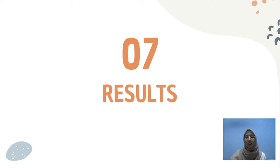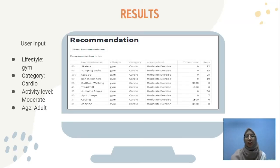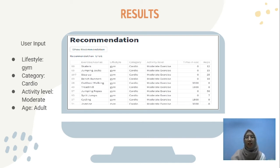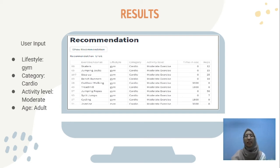For the last section, these are the results of the system. This slide shows results from the first user, where the user has input his or her preferences. The user chose gym as the preferred lifestyle, cardio activity as the category, which is equivalent to aerobic activity, and moderate exercise as the activity level, with the age group adult. As shown, there is a list of 10 recommended exercises with the highest similarity to user preferences, including skaters, jumping jacks, step-ups, cycling, jogging, and other exercises — all indeed among aerobic activities suitable for the user's age.